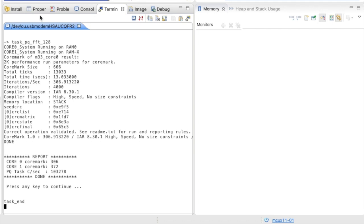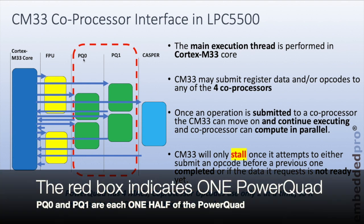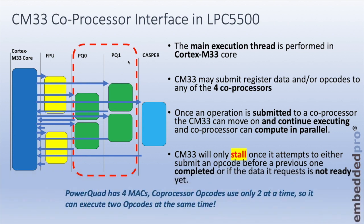That's the demo ended. The important thing is that implementing the FFT on the DSP accelerator is much, much faster than doing it in software. Here's a drawing of the coprocessor interface in the LPC-55S69. The Cortex-M33 is shown in blue on the left. There are four coprocessors implemented: the floating point unit accelerator, two Power Quads (Power Quad 0 and Power Quad 1), and a security accelerator known as Casper. Each Power Quad module has four multiply-and-accumulate units, and a coprocessor opcode uses two of those at a time, enabling two opcodes per Power Quad to execute simultaneously — very useful for vector calculations.